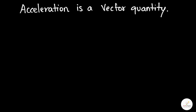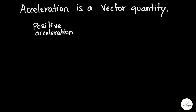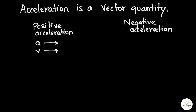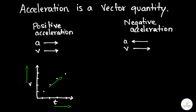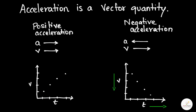Like velocity, acceleration is a vector quantity because it has both magnitude and direction. Acceleration is of two types: positive acceleration and negative acceleration. If acceleration happens in the direction of velocity, it is said to be positive acceleration. If acceleration happens in the opposite direction of velocity, it is said to be negative acceleration. In positive acceleration, as time increases the velocity increases — from low to high. In negative acceleration, as the time increases, the velocity decreases.